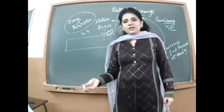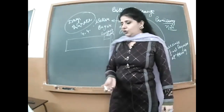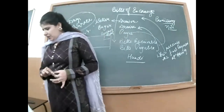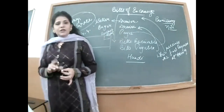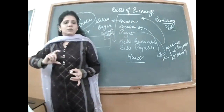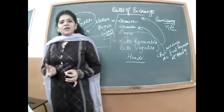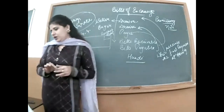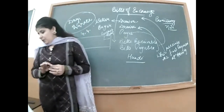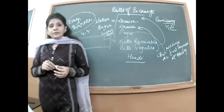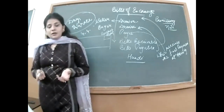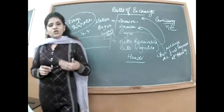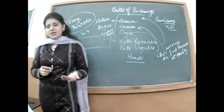Examples of negotiable instruments: bills of exchange, promissory notes, and cheques are recognized by statute — by law. Hundis are recognized by custom and tradition, though nowadays hundis exist very little in rural areas. Share warrants are documents issued by a public limited company promising to issue shares on a later date. Dividend warrants are promises by a company to pay dividend to shareholders.